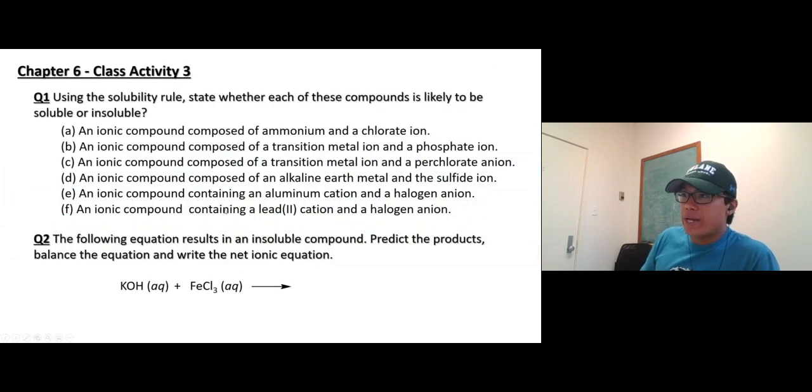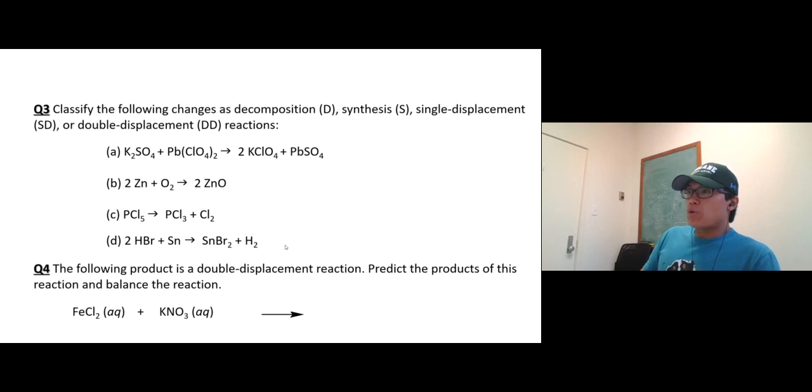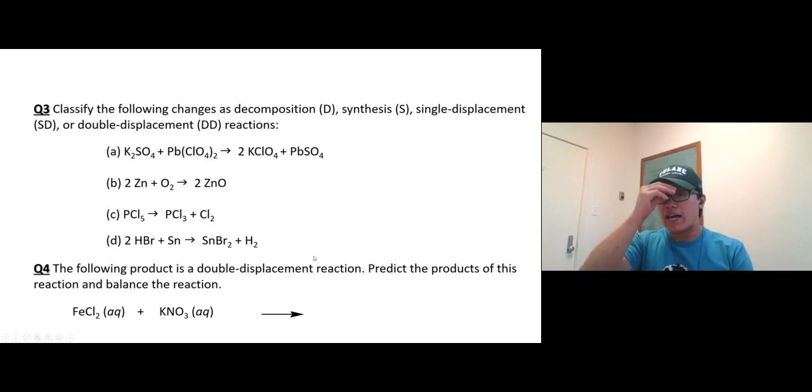Class activity number three, question one. Use the solubility rule. Question two, write the balance and write the net ionic equation. Question three, synthesis, single displacement, categorize this reaction. Last one, predict the product and balance equation. This is the last slide of this chapter. I also post, besides the study guide, all quizzes. Practice for this chapter and a key as well. Make sure you do that too. Thank you very much, I'll see you in chapter seven.